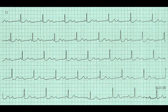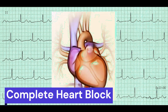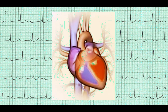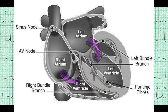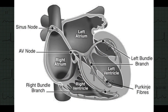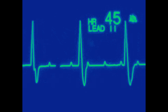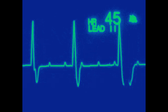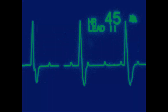Third-degree heart block, also known as complete heart block, is a type of cardiac conduction disorder in which there is no transmission of electrical impulses from the atria to the ventricles. This results in a complete dissociation between the atria and the ventricles, causing them to beat independently of each other.